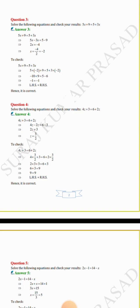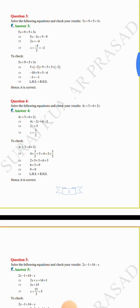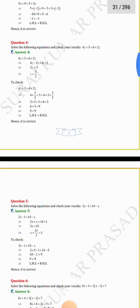To check, we keep z equals 3/2 in place of z. 4 × (3/2) + 3 = 6 + 2 × (3/2) gives 6 + 3 = 6 + 3, so 9 equals 9. LHS equals RHS, hence it is correct.